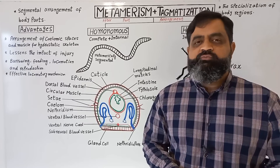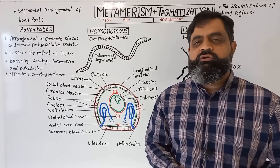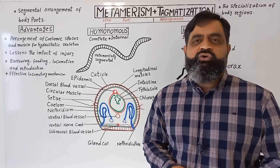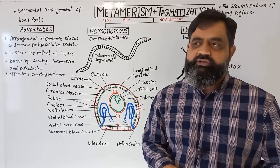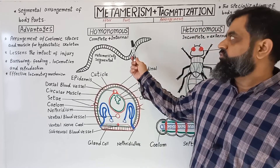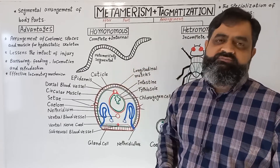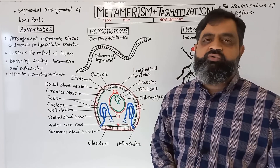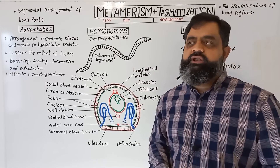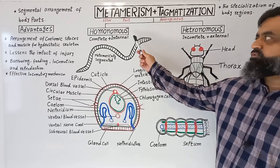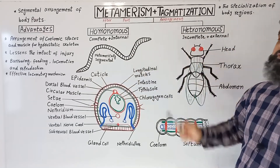Metamerism was first observed in phylum Annelida, which includes earthworms, Oligochaeta, Hirudinea, and Polychaeta. I am taking the example of earthworm to discuss metamerism. But first, we are going to discuss the types of metamerism. There are two main types: homonomous metamerism and heteronomous metamerism.